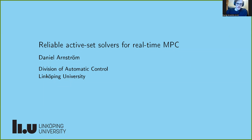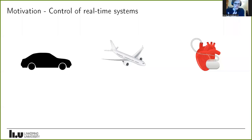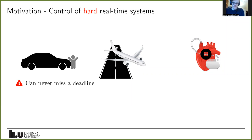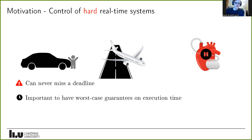I'll jump right into the motivation behind this work: the control of real-time systems. Three typical real-time systems have in common that to operate correctly they must abide by deadlines. These are in fact hard real-time systems — they can never miss a deadline, because doing so would be catastrophic. For example, a self-driving car might not yield to pedestrians, an airplane might miss the landing strip, or a pacemaker failure could lead to cardiac arrest. So worst-case guarantees are very important.